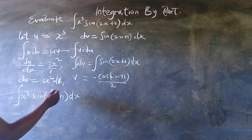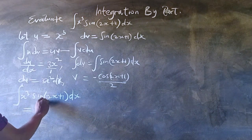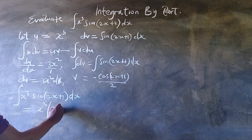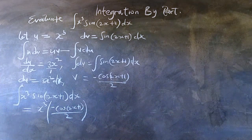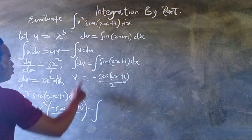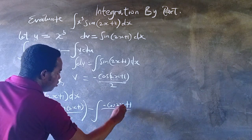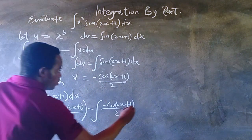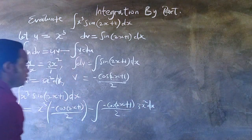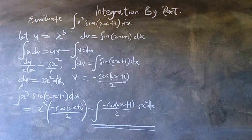The integral of x³ sin(2x+1) dx equals u times v, where u is x raised to power 3, minus the integral of v times du, where v is negative cos(2x+1) all over 2, and du is 3x squared dx. This is partly solved, but notice we still have an integral in our solution, so we have to repeat this process.